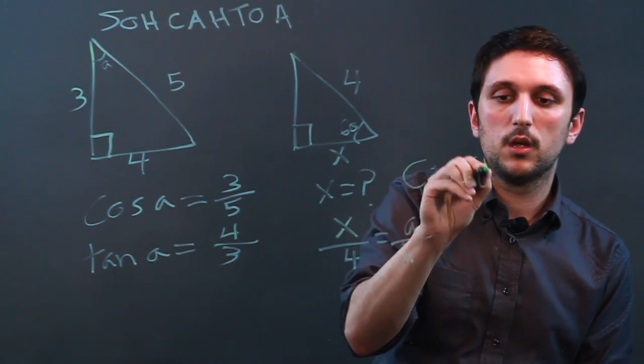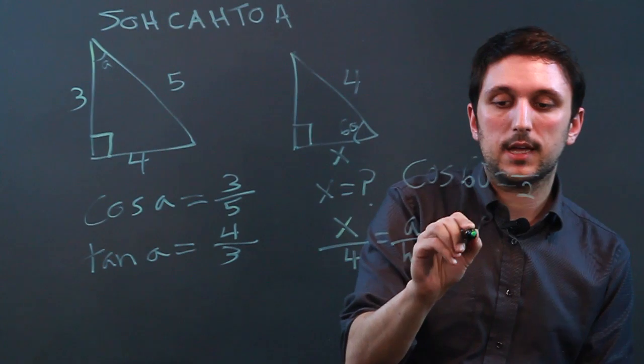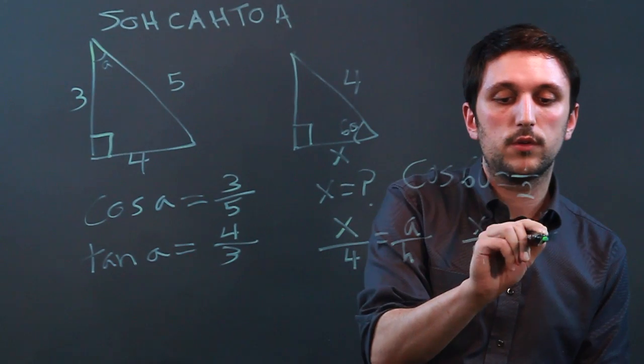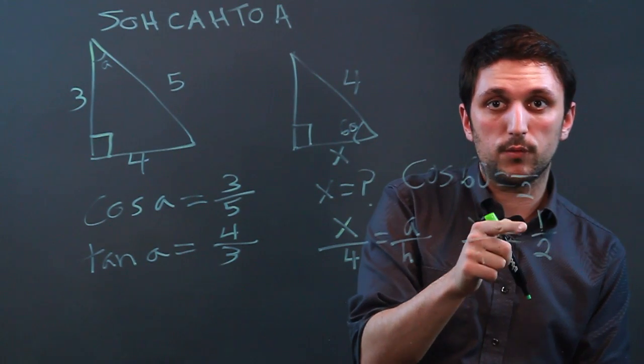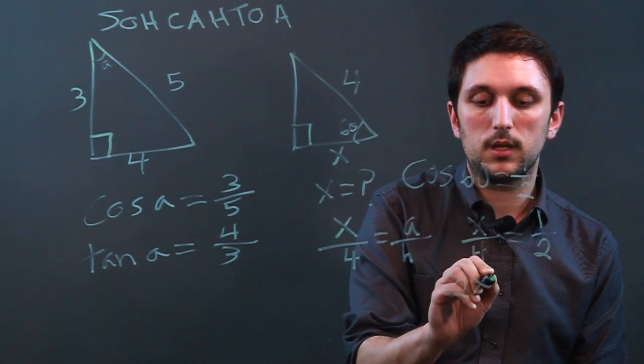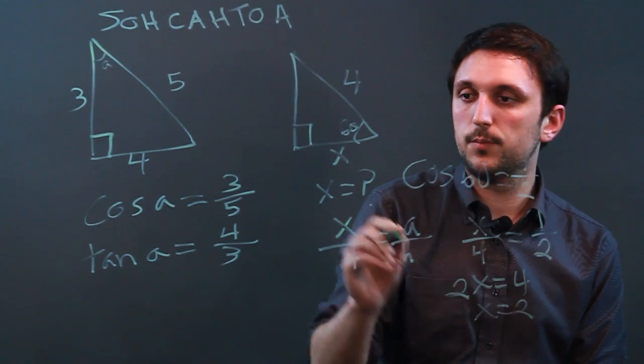Which equals 1 half, and we say X over 4 equals 1 over 2. So if X over 4 equals 1 over 2, we can cross multiply. So 2 times X equals 4, and so X equals 2. And so we know that this side length will be 2.